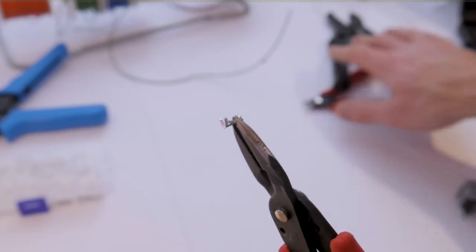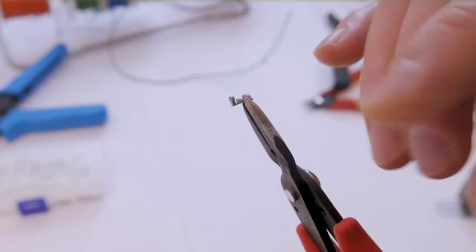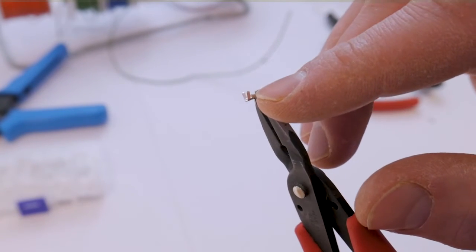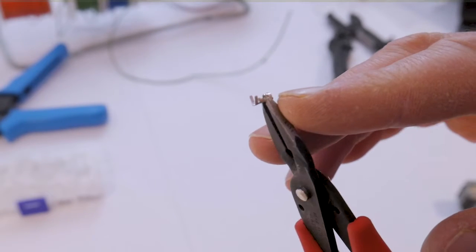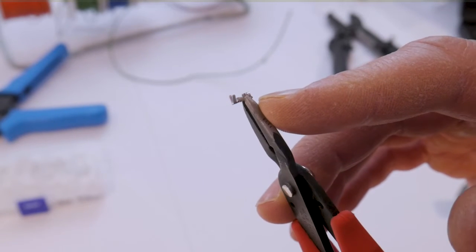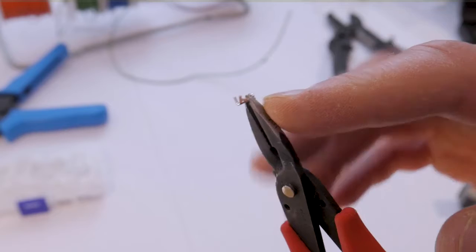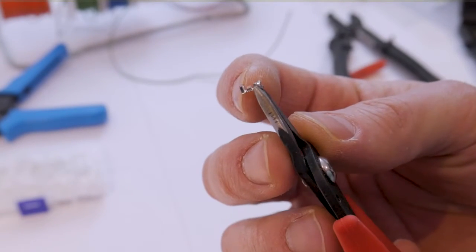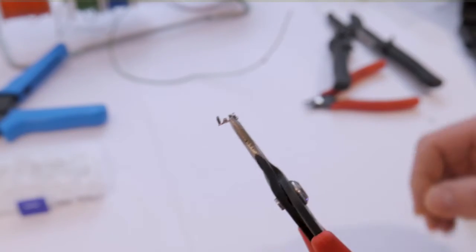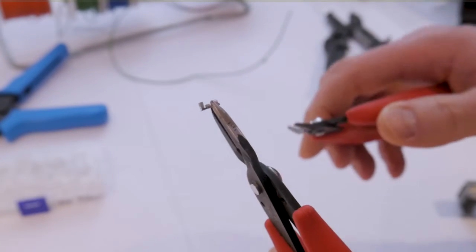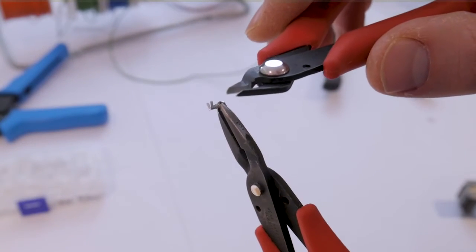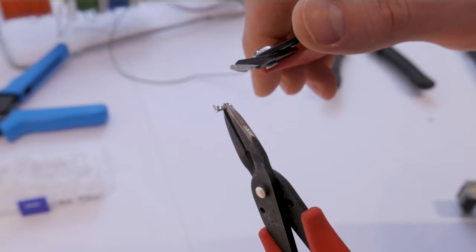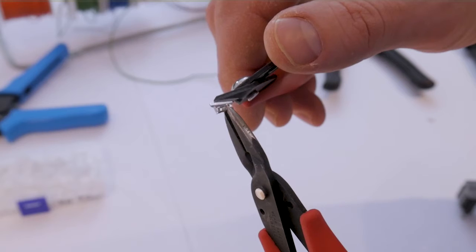Now before we go ahead and use the other crimping tool, the one thing I want to point out here is that these longer wings might be part of the problem. Now I'm using these Chinese knockoffs, whereas I don't know if authentic JST terminals have these very long style wings here that are meant to grab onto the wire insulator, but I've noticed that I've had a lot more success if I just take a pair of side cutters and trim these down just a touch.